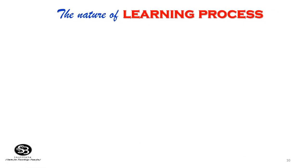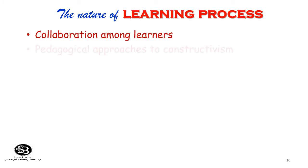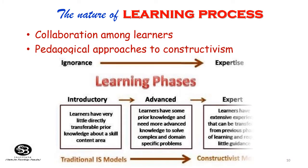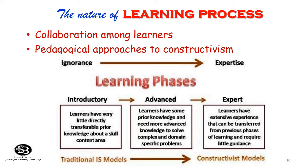The learning process is a collaboration method among the learners. It also has pedagogical approaches to constructivism. Learning phases in constructivism has three stages: introductory, advanced, and expert. In the introductory stage, learners have very little directly transferable prior knowledge about the skill or content area. In the advanced stage, learners have some prior knowledge and need more advanced knowledge to solve complex and domain-specific problems. In the expert stage, learners have extensive experience that can be transferred from previous phases of learning and require little guidance. The transformation from introductory to expert is equivalent to a transition from instructional models to constructivism.